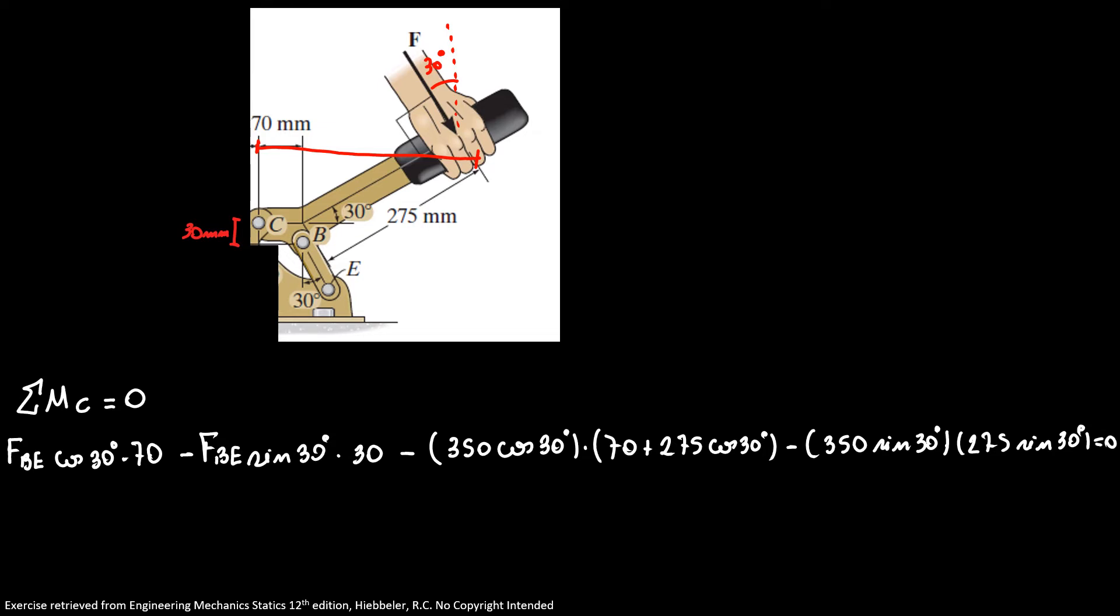So here we have that our force BE is equal to 117,468 divided by 70 cosine of 30 plus 30 sine of 30. So we have a value for our force BE is equal to 2574.8 newtons.